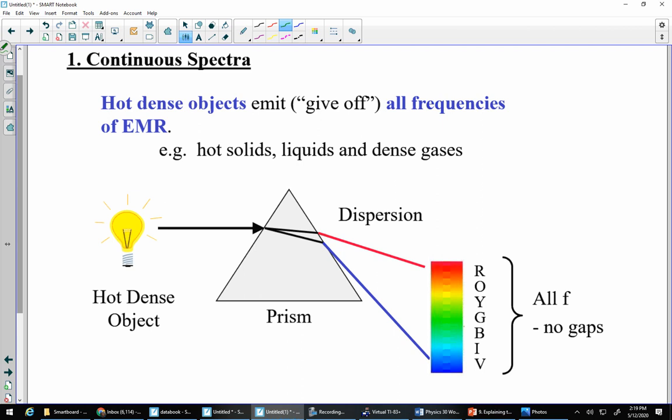Continuous is when we have a hot, dense object which gives off all frequency of light. So, hot, dense object might be the incandescent light bulb where you see the little squiggly piece of metal, typically tungsten, I believe. Inside, it gets hot. It's very, very dense, that metal, and it gives off light, and it gives off light in all frequencies with absolutely no gaps. So, typically, we see this from hot solids, hot liquids, and hot, dense gases. All frequencies, no gaps.